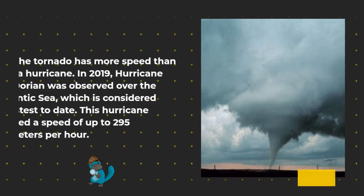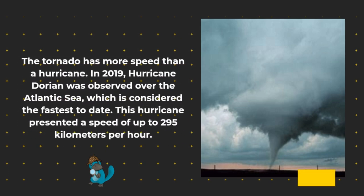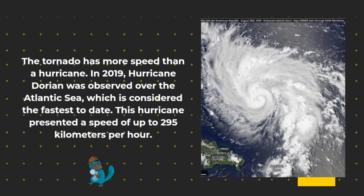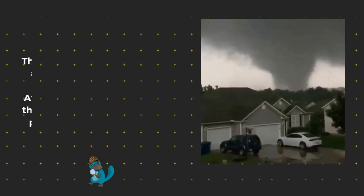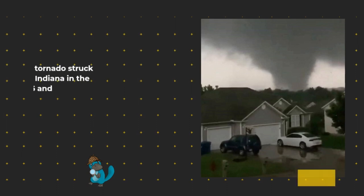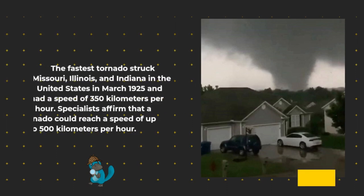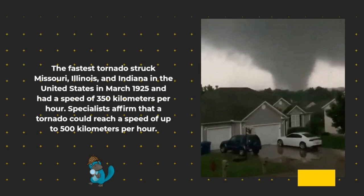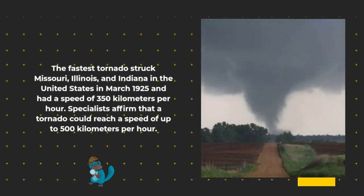The tornado has more speed than a hurricane. In 2019, Hurricane Dorian was observed over the Atlantic Sea, which is considered the fastest to date, presenting a speed of up to 295 kilometers per hour. The fastest tornado struck Missouri, Illinois, and Indiana in the United States in March 1925 and had a speed of 350 kilometers per hour. Specialists affirm that a tornado could reach a speed of up to 500 kilometers per hour.